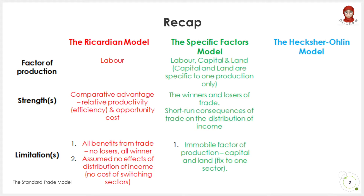In the Specific Factors model, it includes multiple factors of production — that is, labor, capital and land — and captures the short-run consequences of trade on the distribution of income. However, the model assumes that capital and land are specific to the sector in which they are employed.